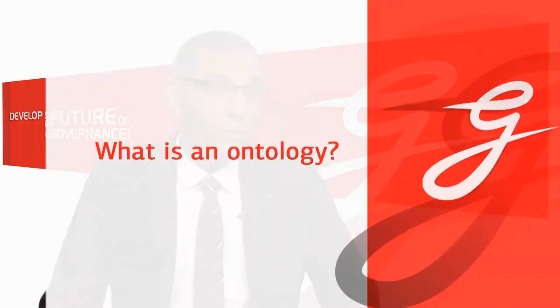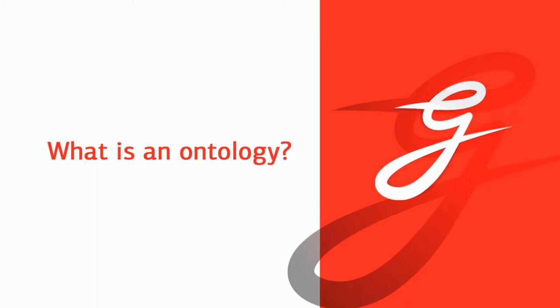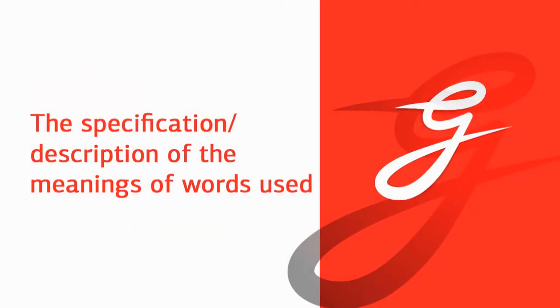What's an ontology? If you go to Google and ask what is an ontology, you will find something related to philosophy — the subject of existence. But we are not dealing with those things. We actually mean by ontology the specification or description of the meanings of the words we use in a domain, like in the government domain.